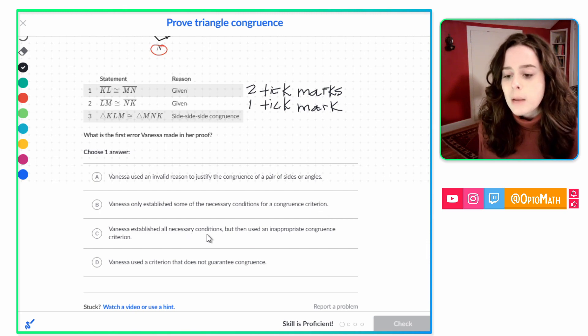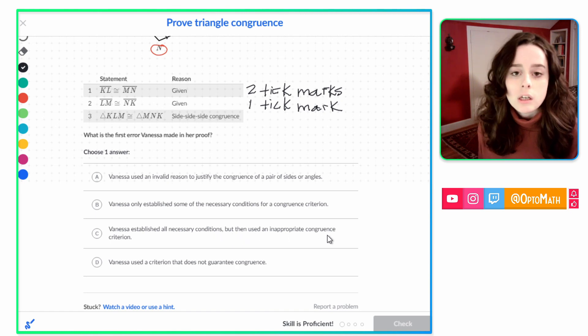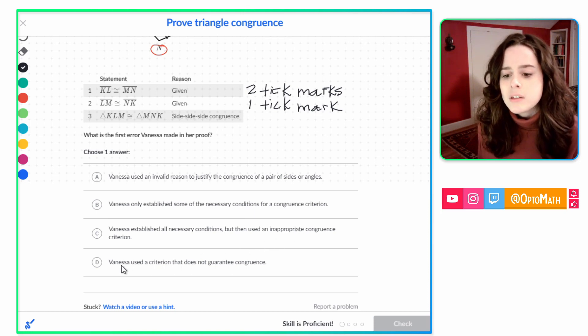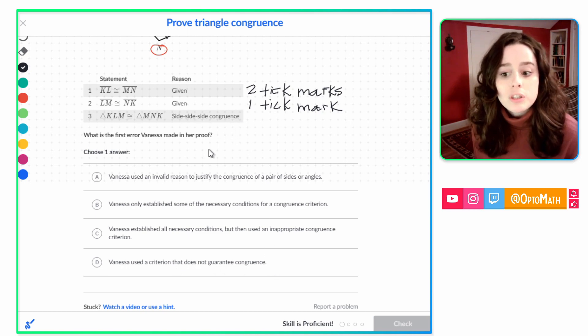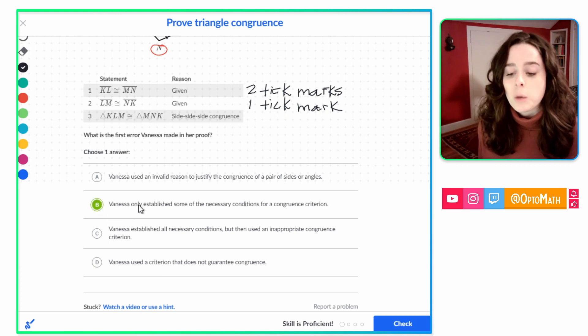C, Vanessa established all necessary conditions, but then used an inappropriate congruence criterion. No, we decided she did say side, side, side, which is true, but she left a piece out. And D, Vanessa used a criterion that does not guarantee congruence. Side, side, side does guarantee congruence. So it's not that one either. It is B, just like we thought. Let's check.